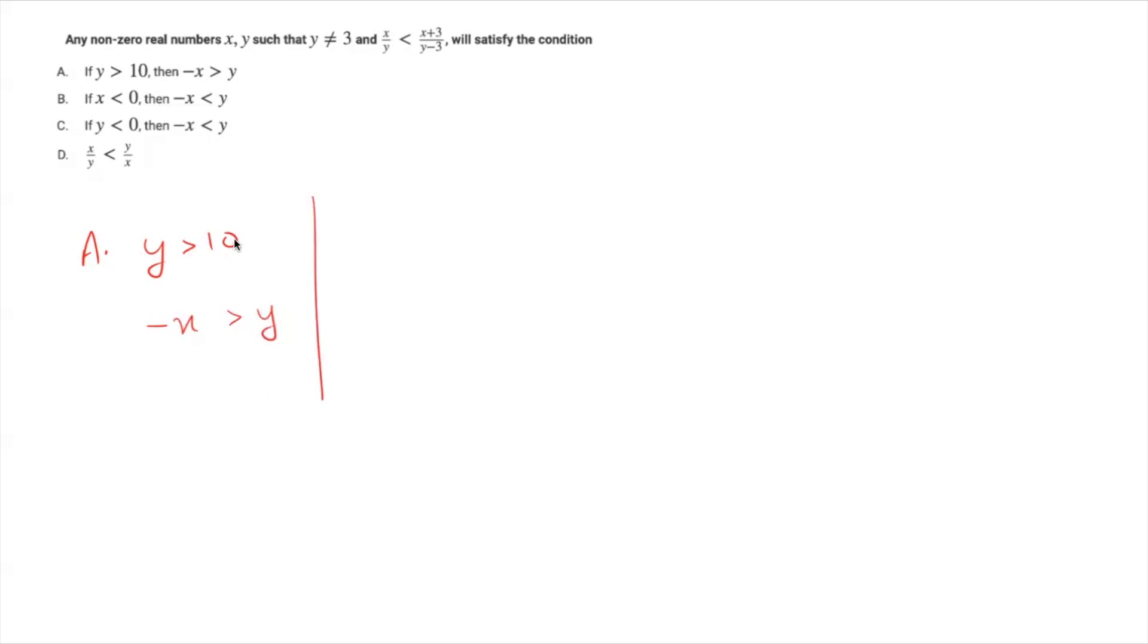So, take any value of y more than 10. Let's take y is equal to 12 for that matter. So, y is equal to 12 should basically give you minus x greater than 12 or multiplying by minus 1 on both sides, you should get x less than minus 12 when you solve. Whenever we multiply by something negative, the inequality will change on both sides.